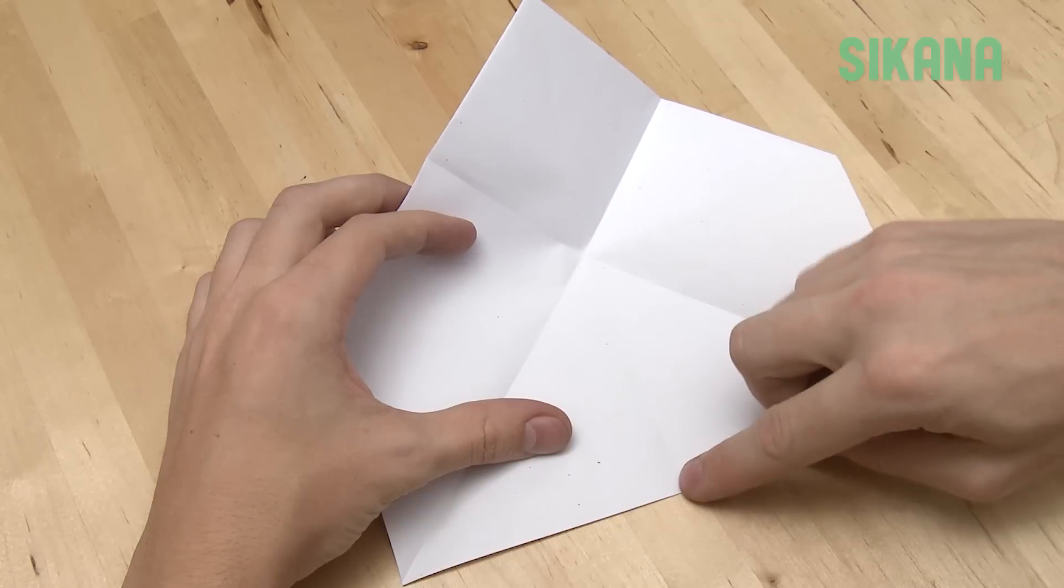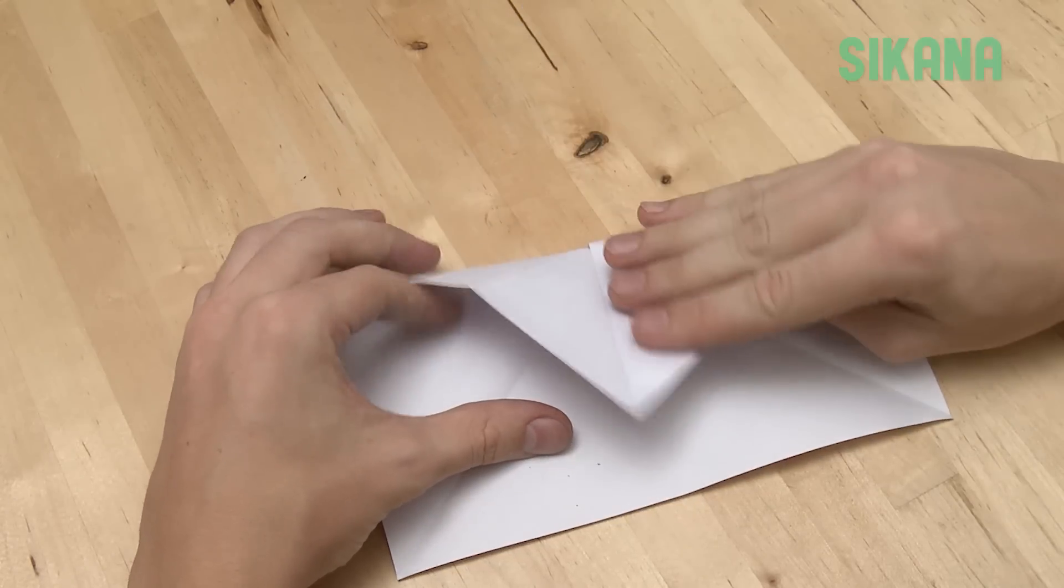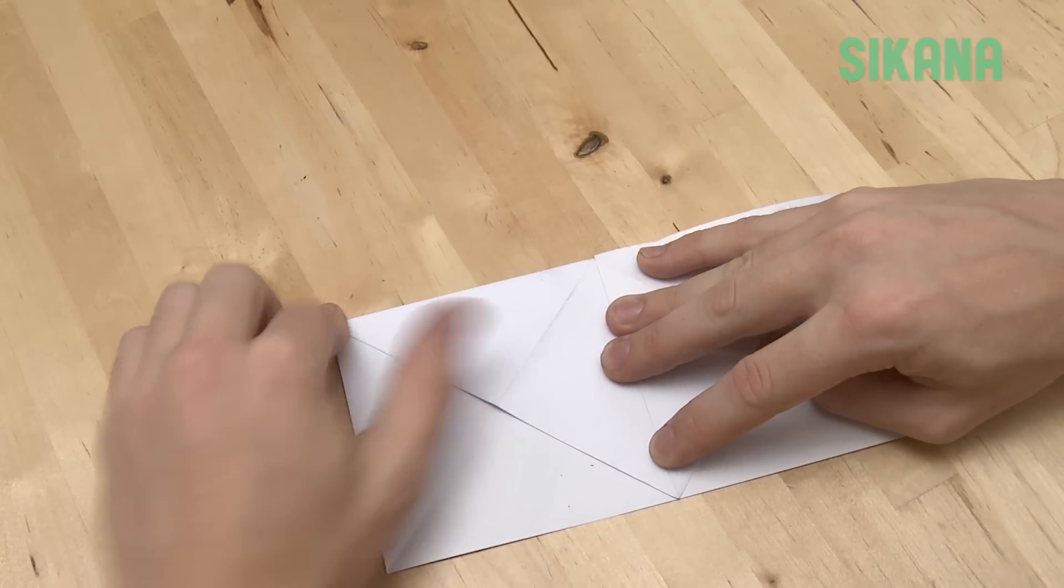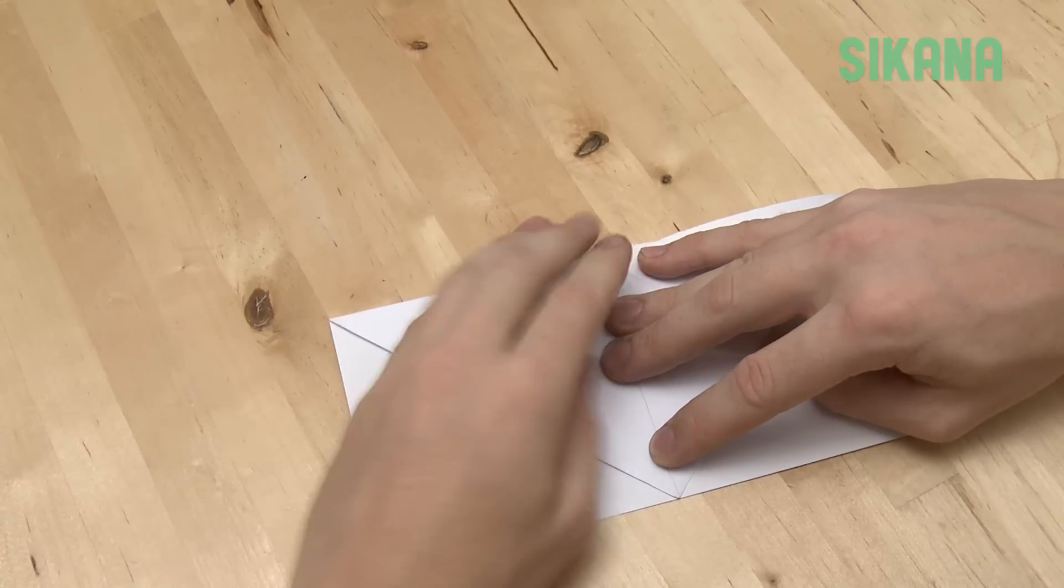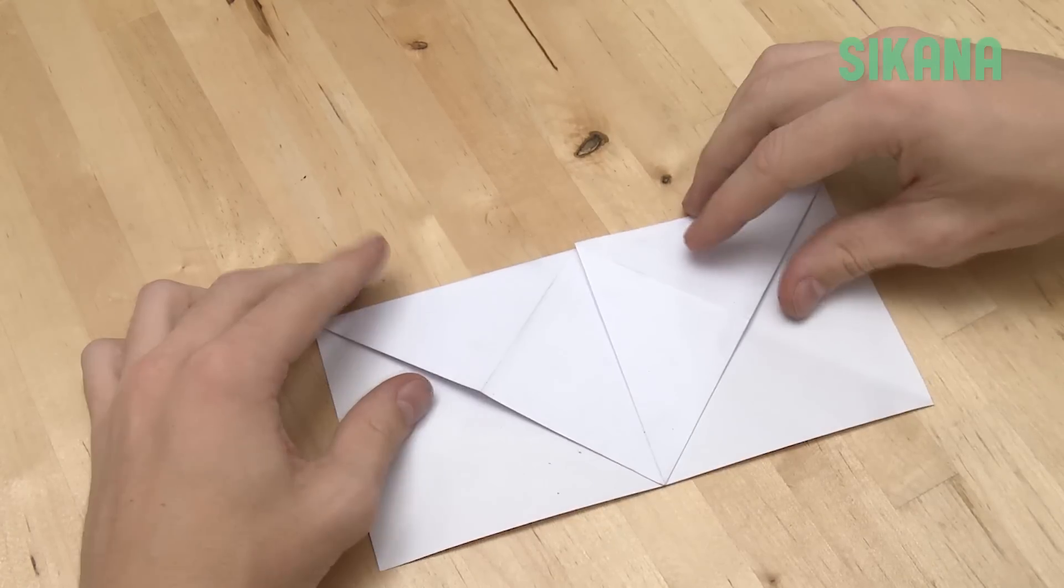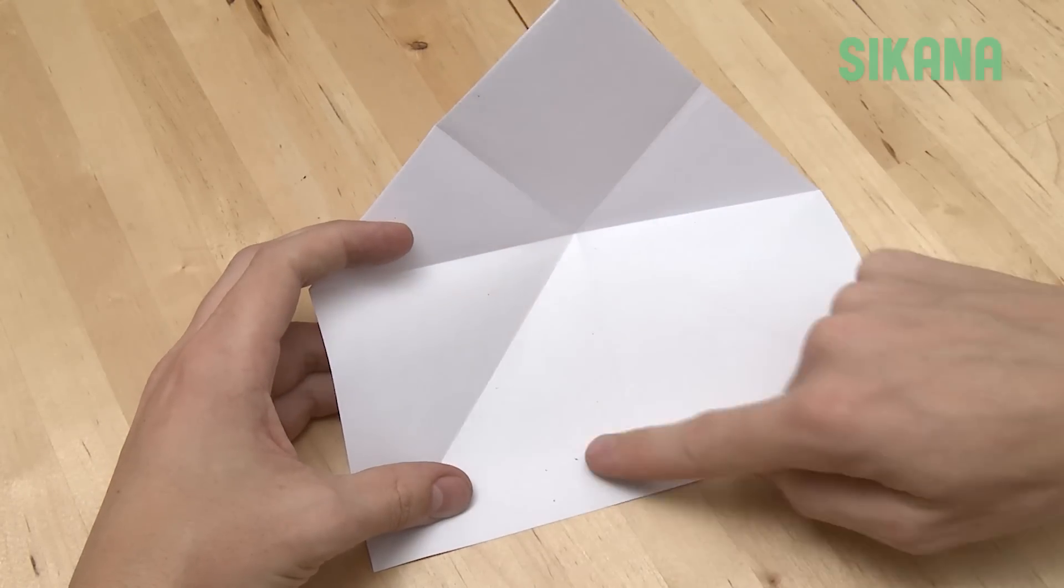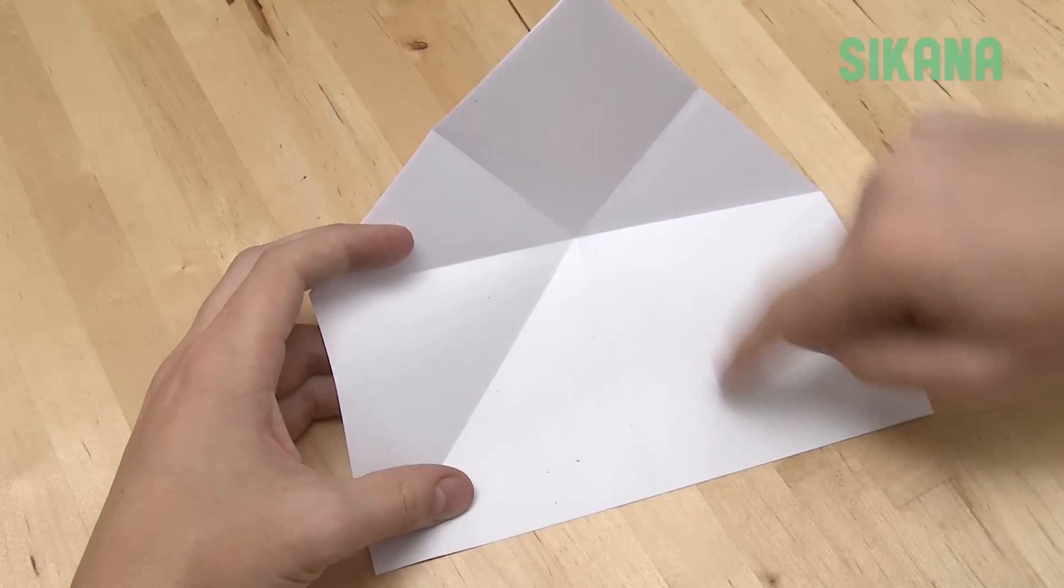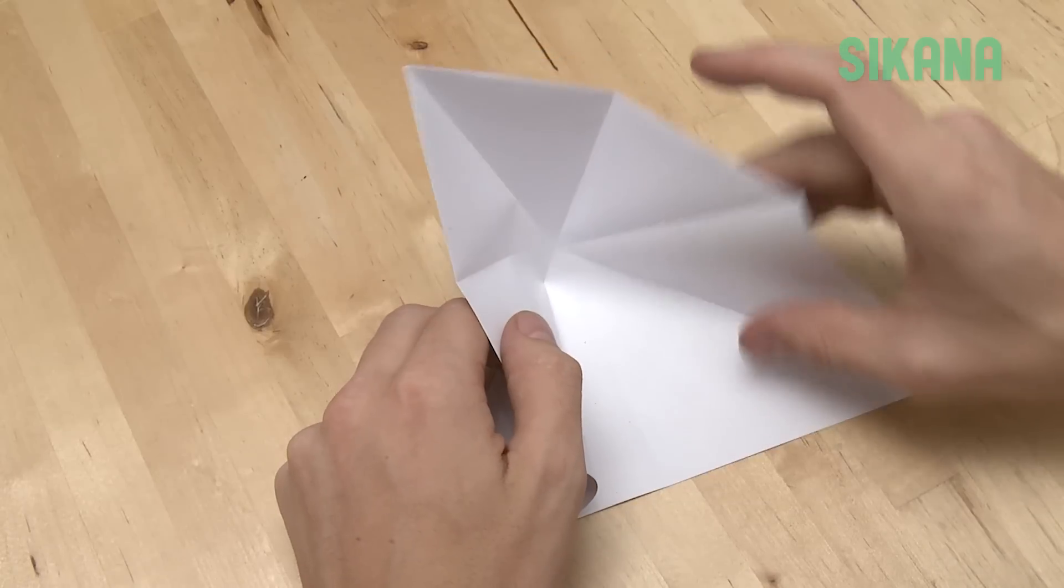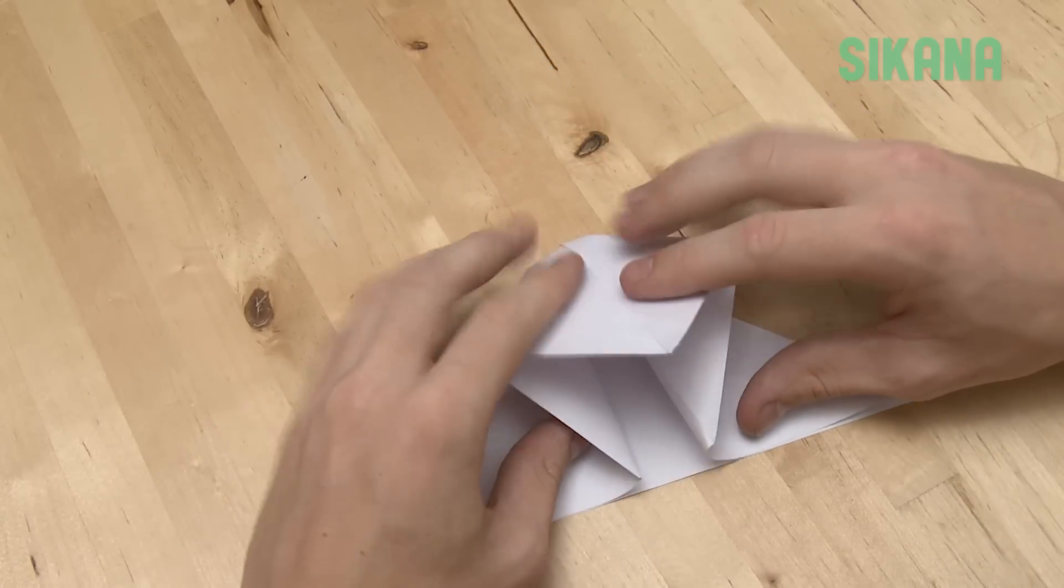Then fold the point here along the center line. You can see the line along here and here too. Open it. Now put this part here and that part there. Fold and close it to get a square like so.